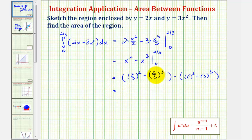So here we're going to have 4 ninths minus, this would be 8 27ths. Of course, this would just be zero.